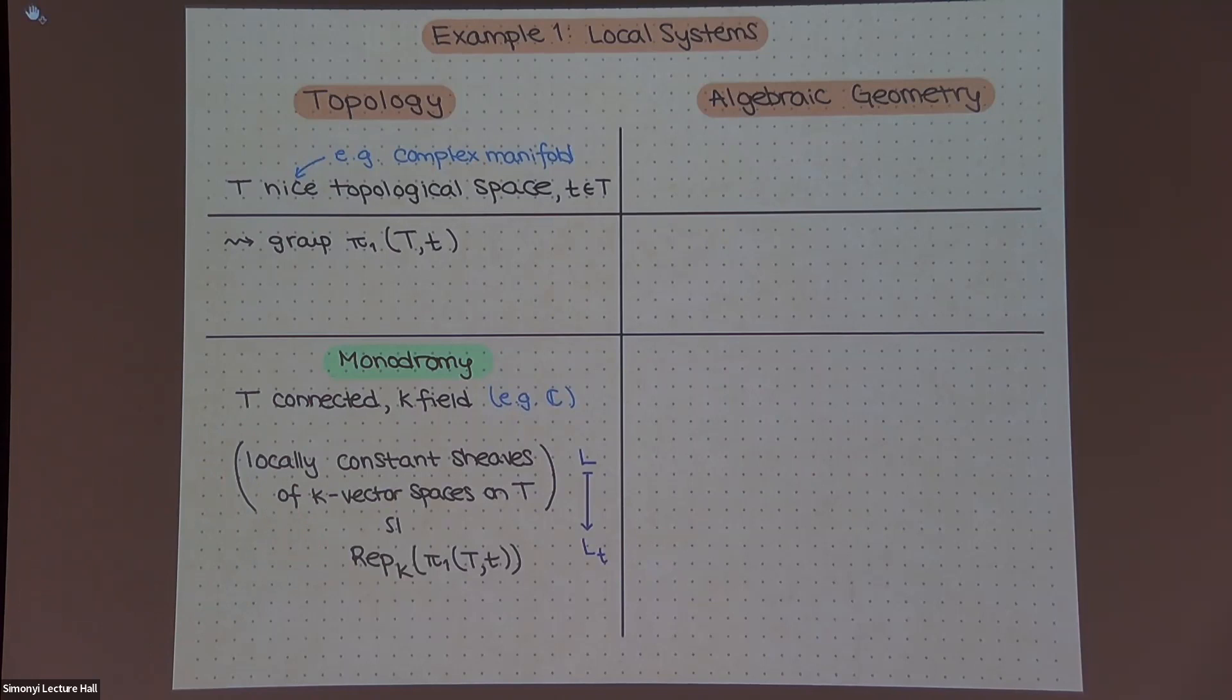And this completely determines the local system. So something that maybe seems complicated because sheaves appear, it can be understood in terms of some kind of small combinatorial object, just a group. Now, the same thing happens in algebraic geometry. I mean, these are actually both consequences of some more general results.